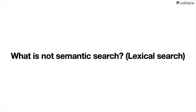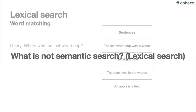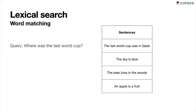Before we get into what semantic search is, let me show you what's not semantic search — basically, what were the previous methods used before semantic search. Before semantic search, the search methods resembled lexical search, which is basically word matching.